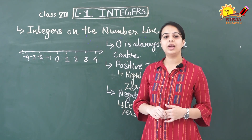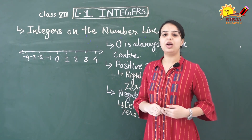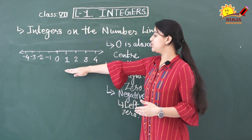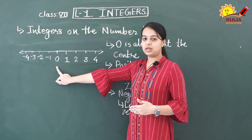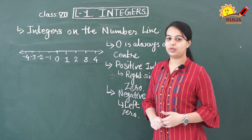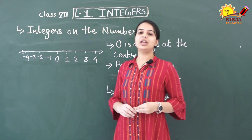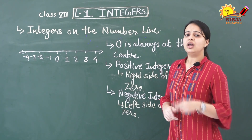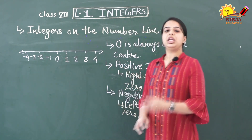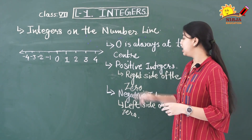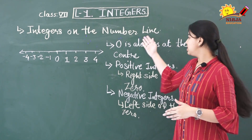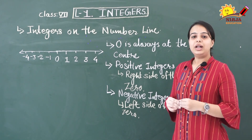Now we are going to see how to represent integers on the number line. You may have learned this in previous classes, so let us recall and add more to the concept. On the number line, 0 is always at the centre; all positive integers lie on the right side of 0, and all negative integers lie on the left side. Keep in mind: 0 is at the centre, positive numbers go right, negative numbers go left.